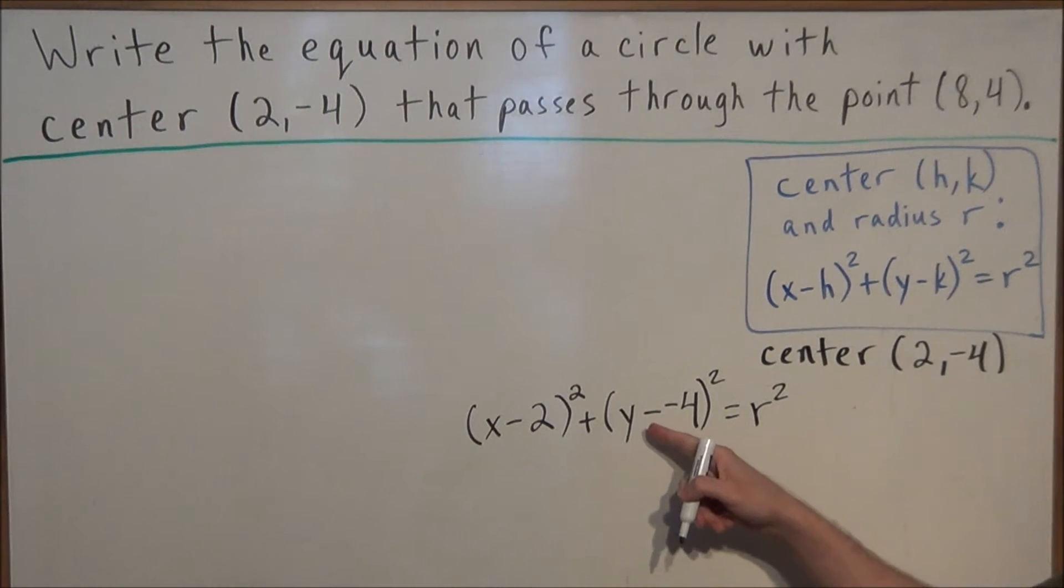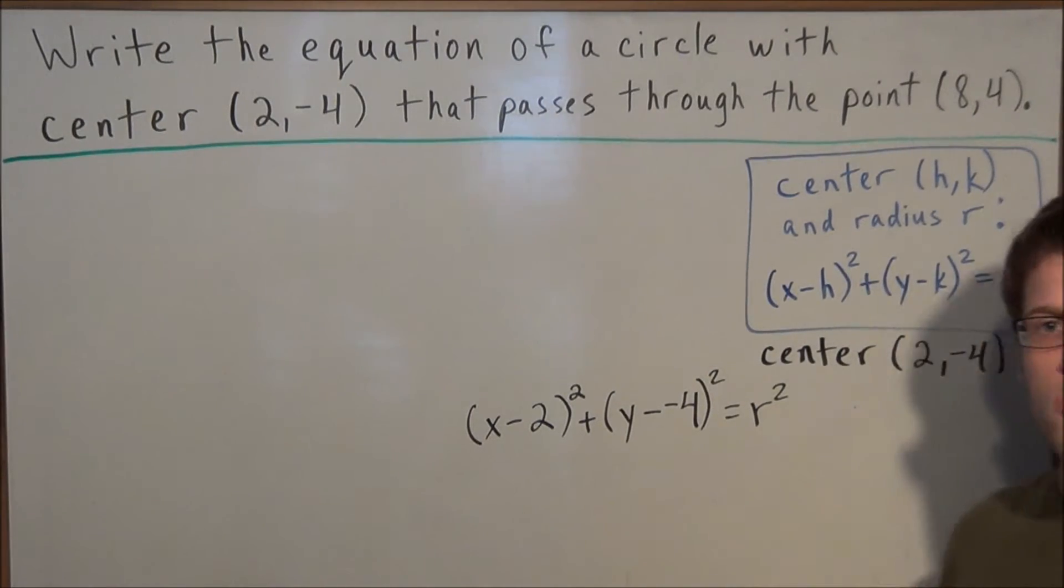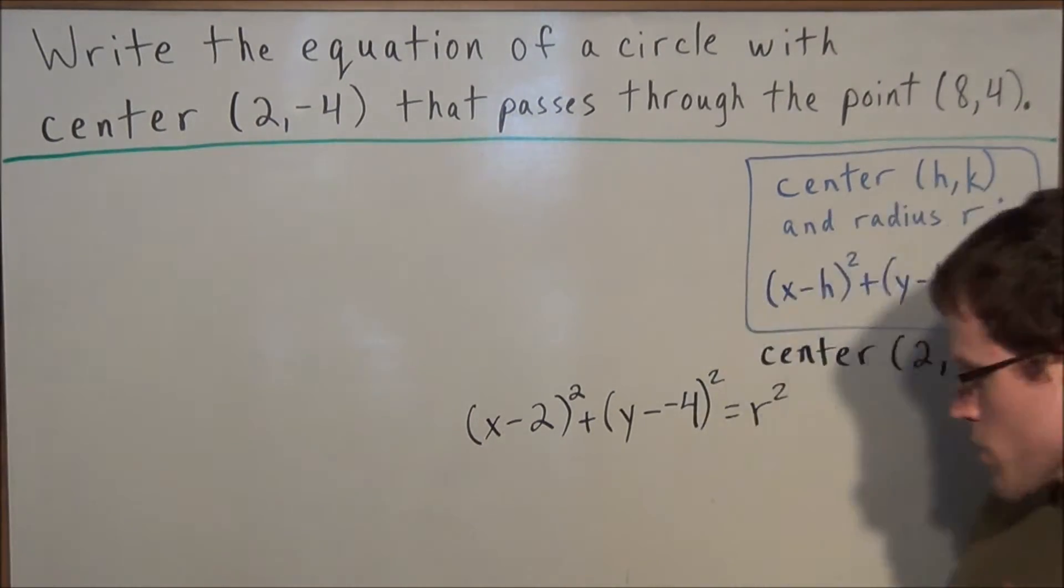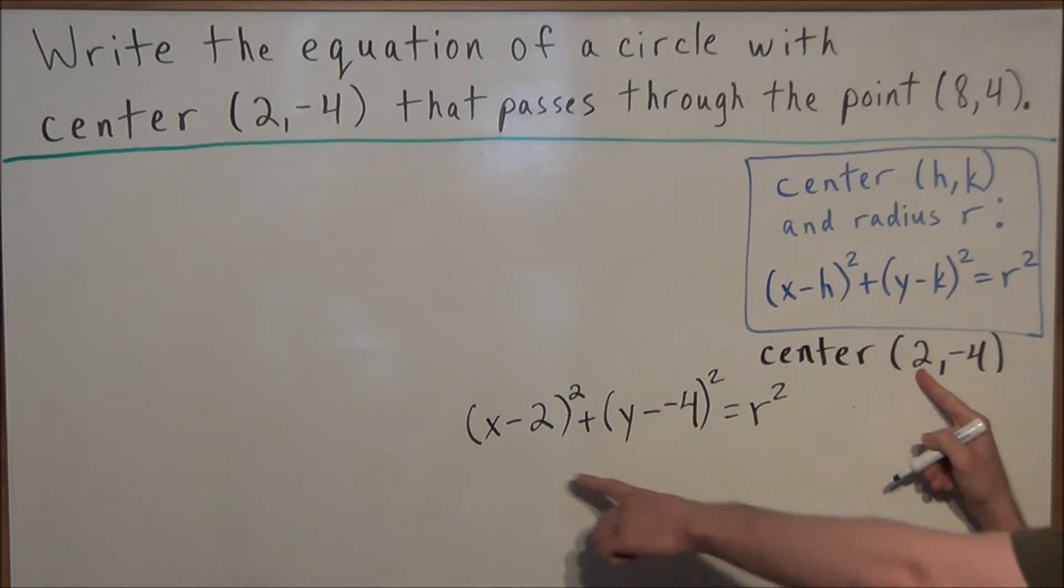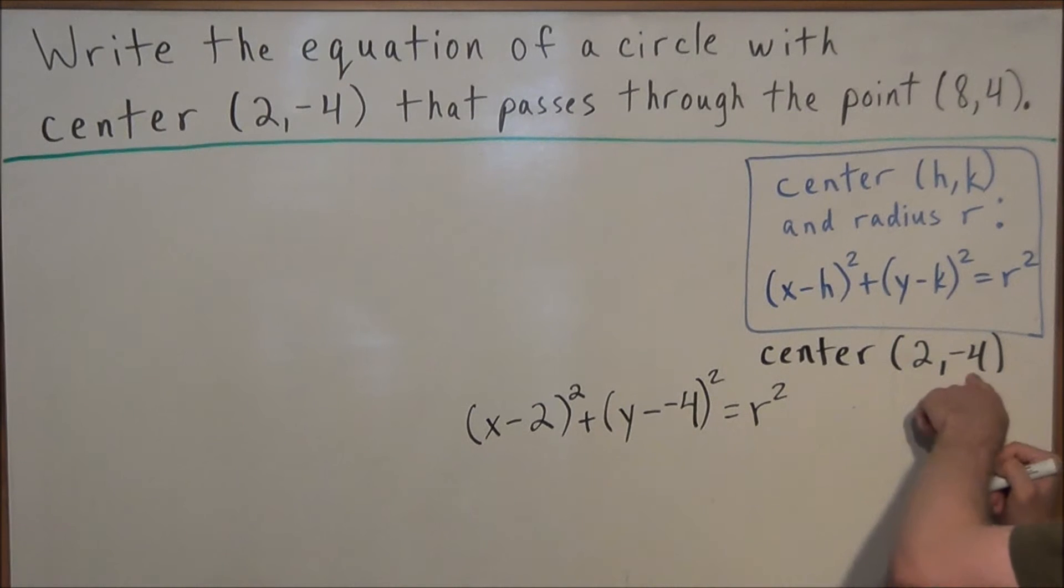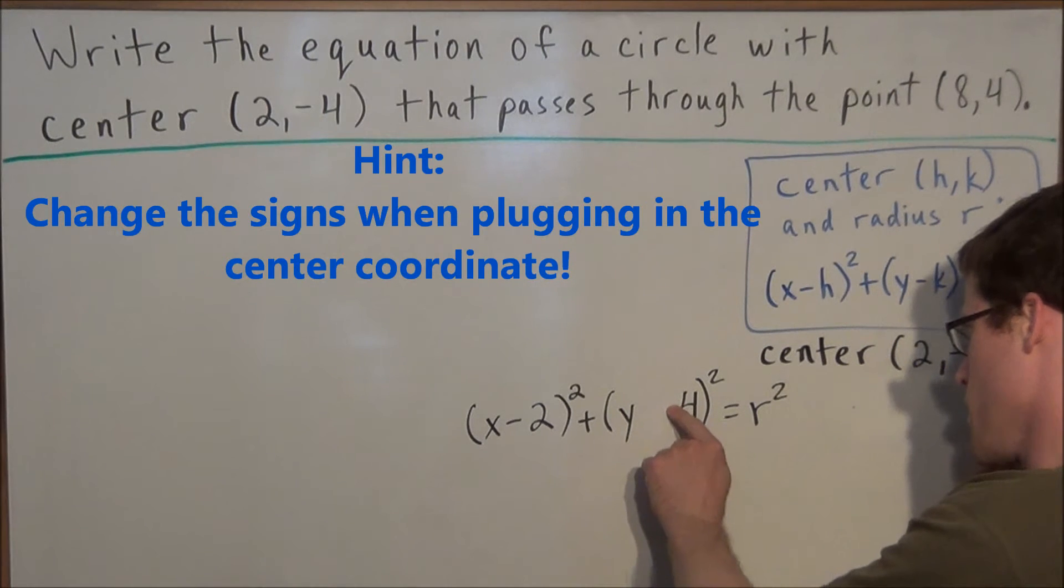So this tells us we know when we have minus minus that's going to change to a plus. But now all we have to do is find the radius. But remember the shortcut to plugging in the center is just change the signs. Instead of positive 2 you're going to have negative 2. And instead of negative 4 we're going to have minus minus which turns to a positive 4 here.